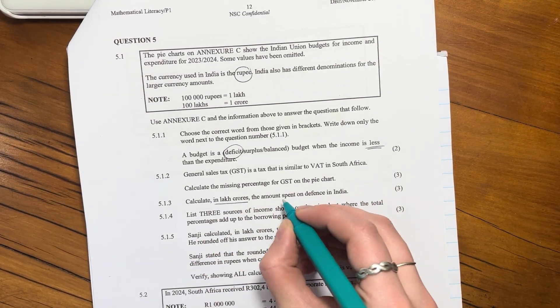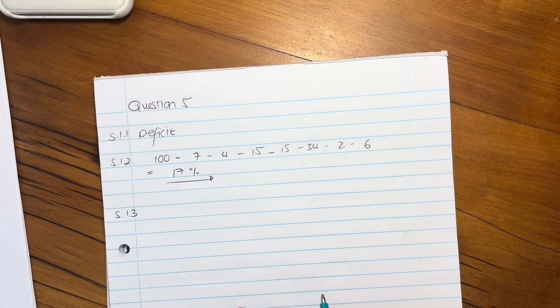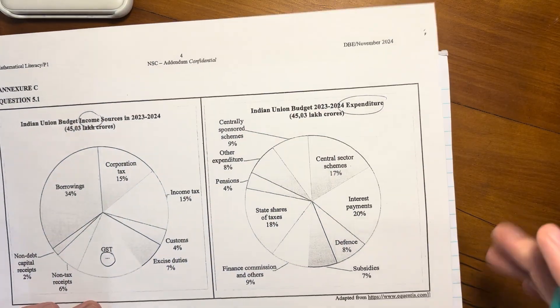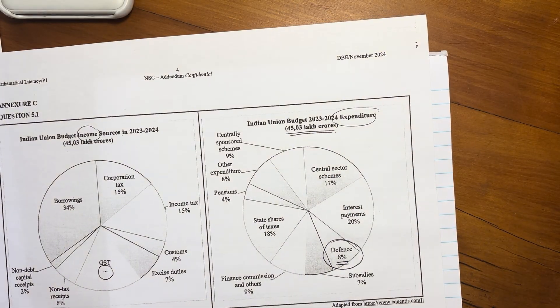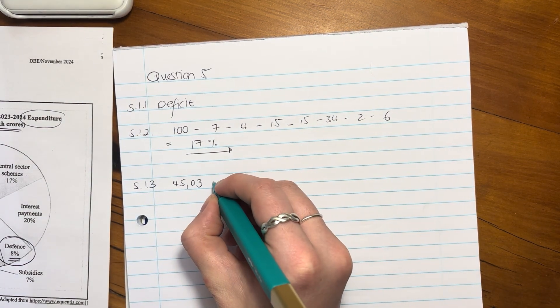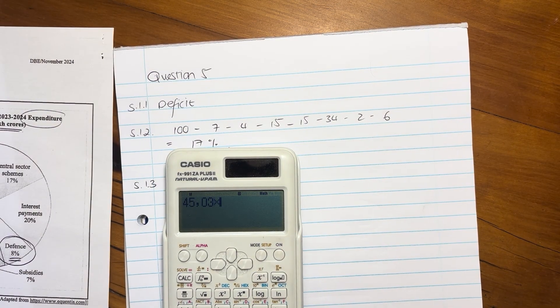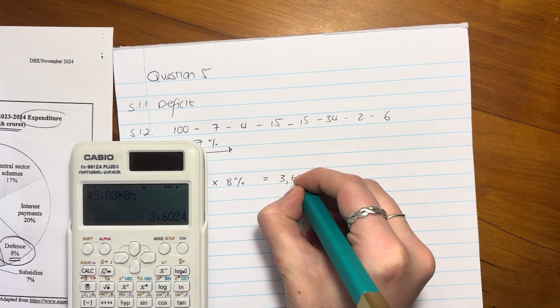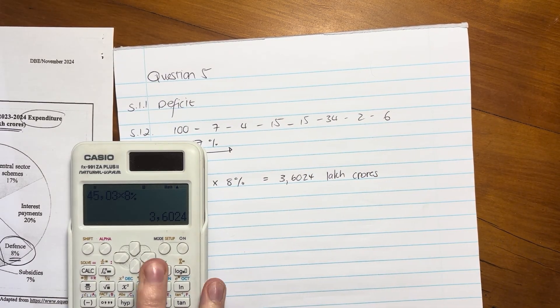Calculate in lakh crore the amount spent on defence in India. So defence is an expenditure. So remember here we have two things. Here's income and then we have expenditure over here. So we're going to look over here. Defence, it says, is 8%. So we're going to say 8% times by our total expenditure. So we're going to say 45.03 lakh crore times 8%. I'm going to pop that in my trusted calculator. Make sure you're putting it in correctly. And it is 3.6024 lakh crore. So don't forget to put in your amount.